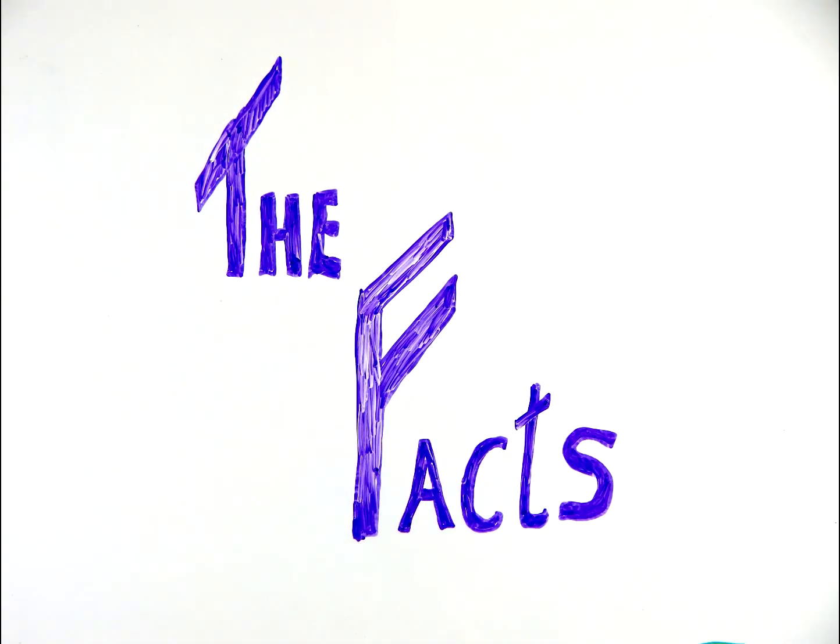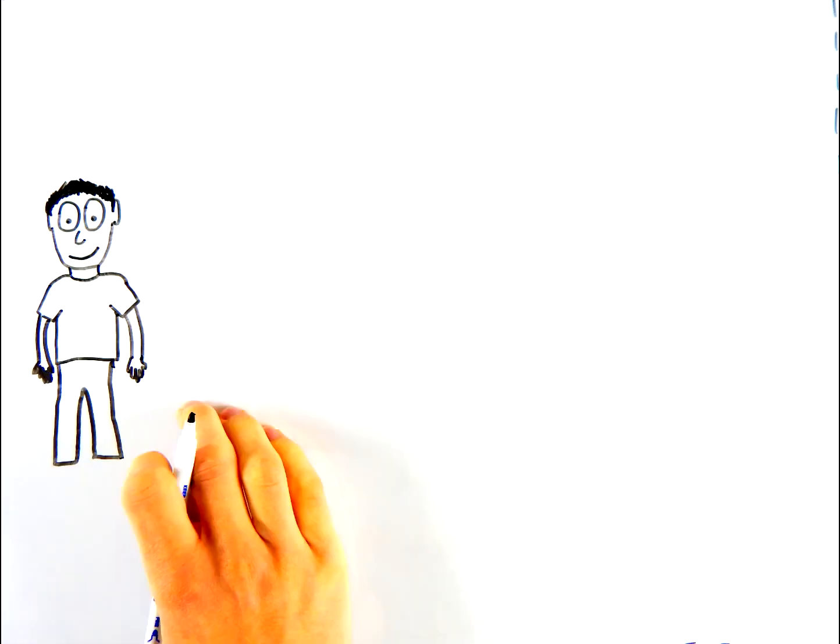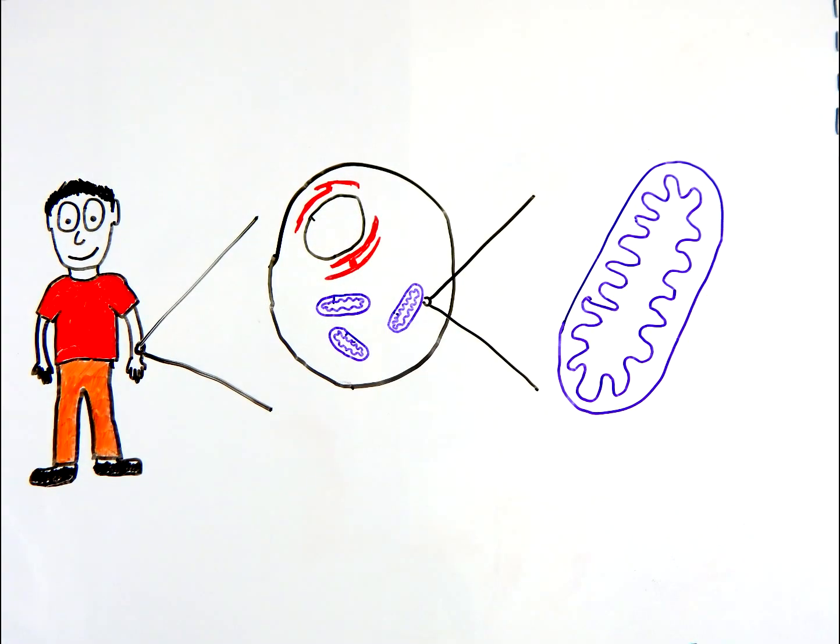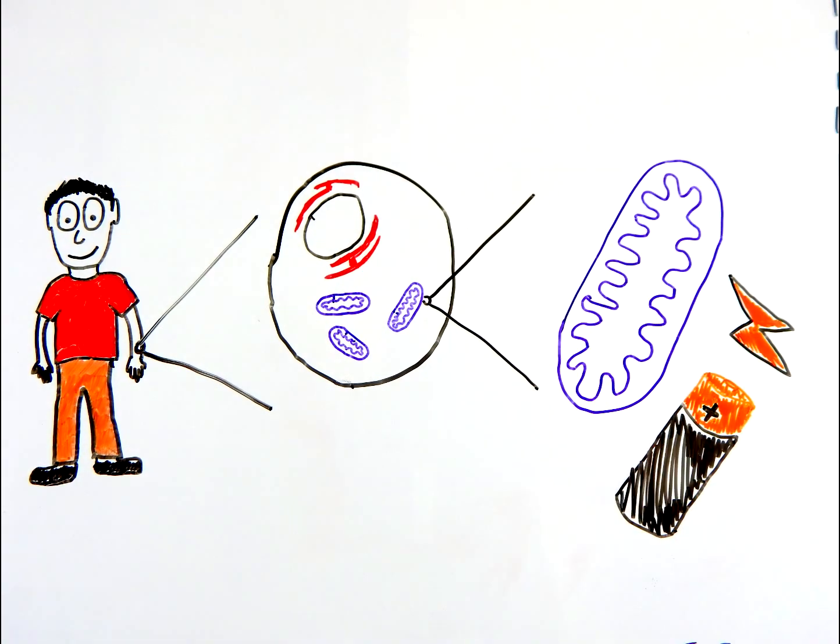As you may know, mitochondria are small organelles found in most eukaryotic cells, which generate most of the cell's supply of energy in the form of ATP. This is the reason they are sometimes known as the powerhouse of the cell.